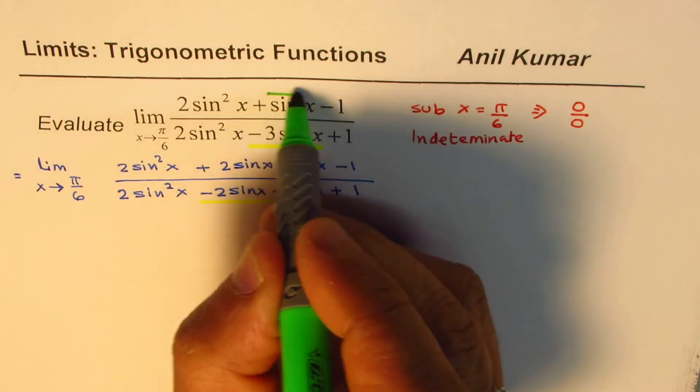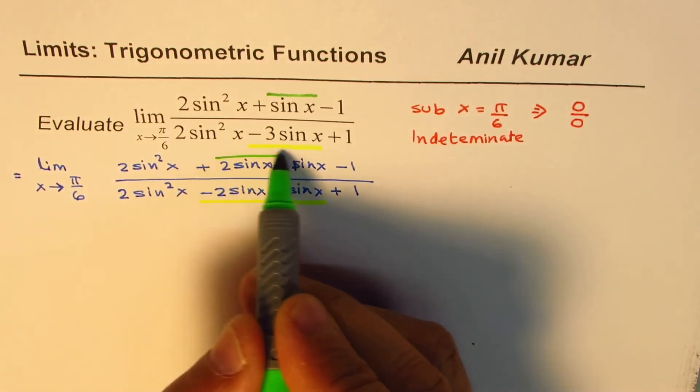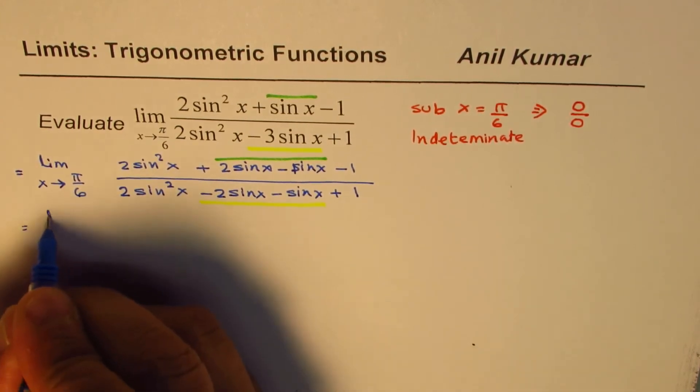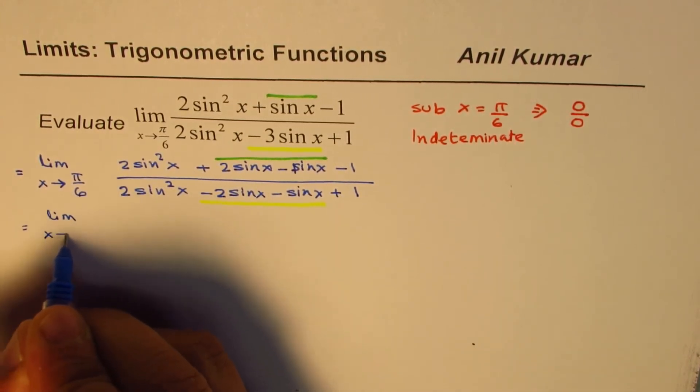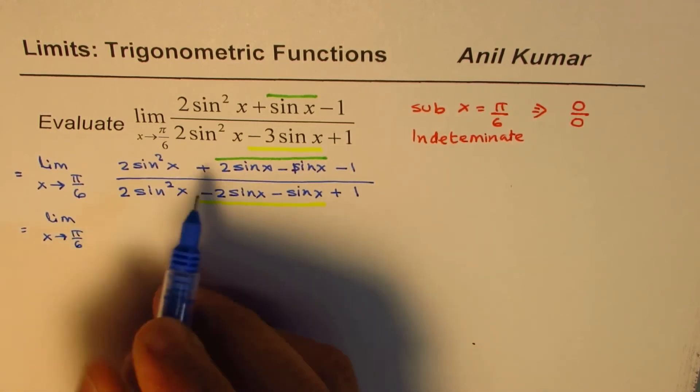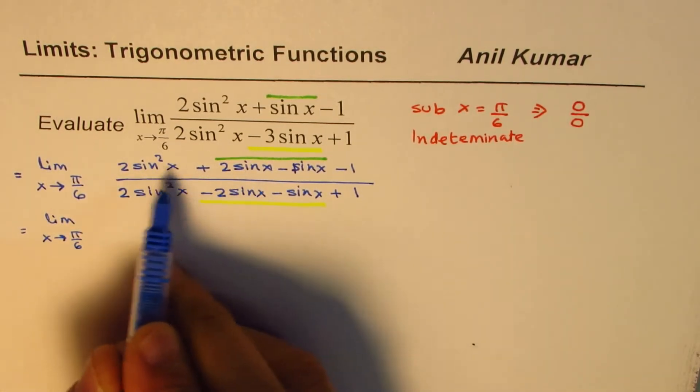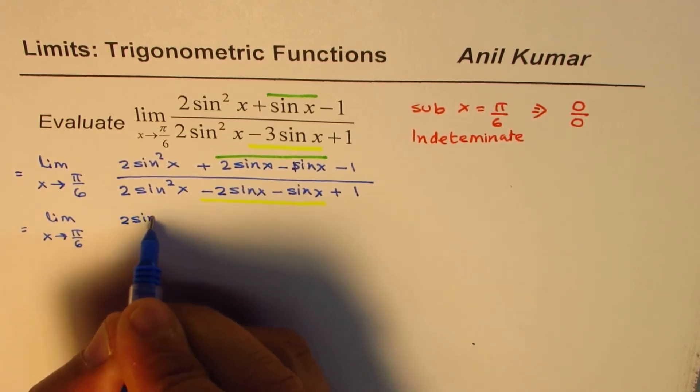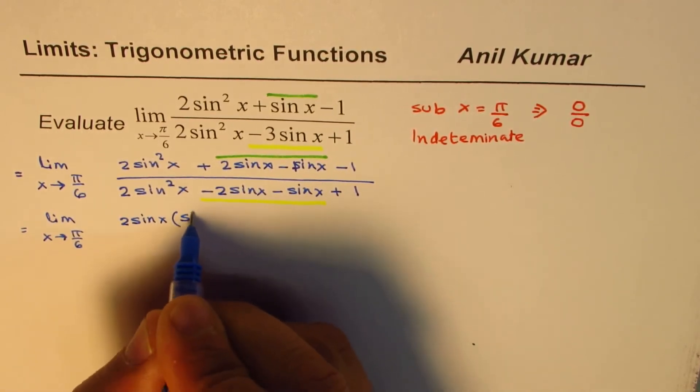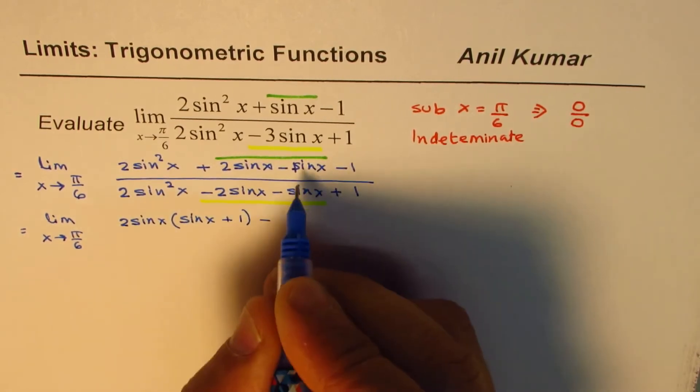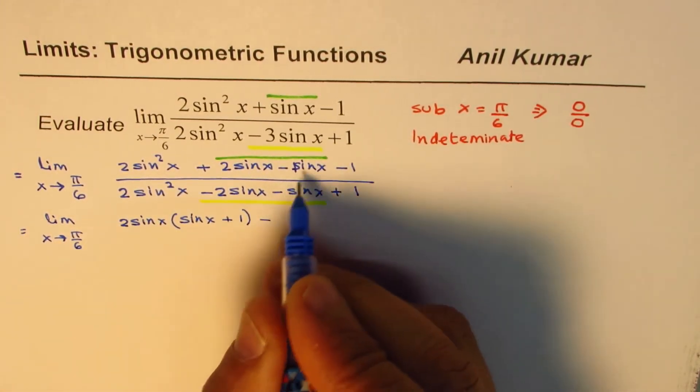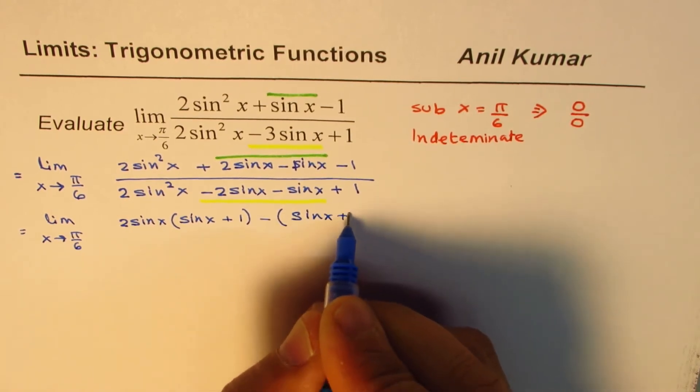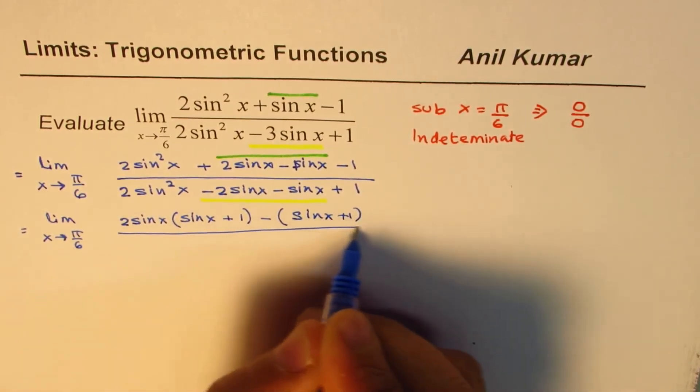From the numerator, we wrote sinx as 2sinx minus sinx. So that gives us limit x approaches π/6. So we can take common factors from the first two, which is 2sinx, 2sinx. We have sinx plus 1 minus. So nothing is common. We will take 1 as common. So we get sinx plus 1 divided by.